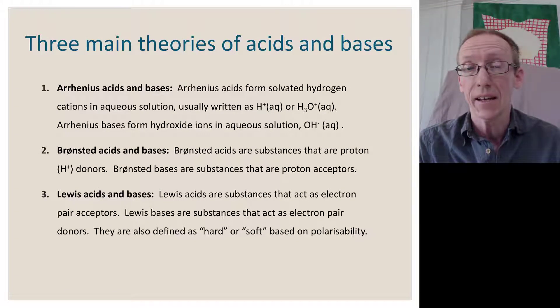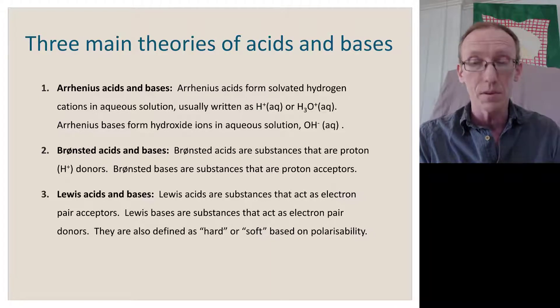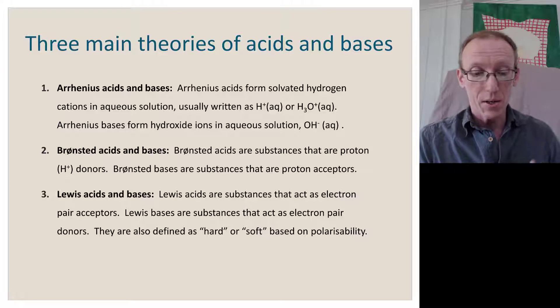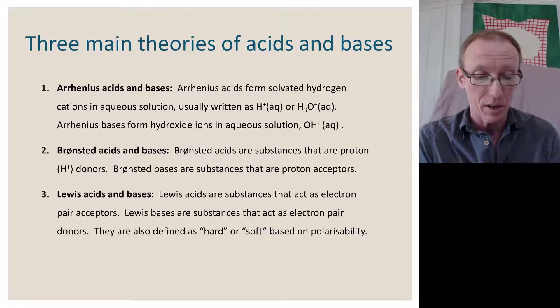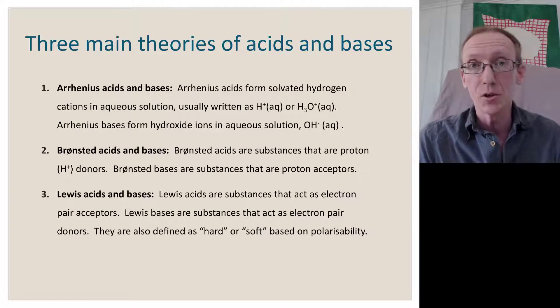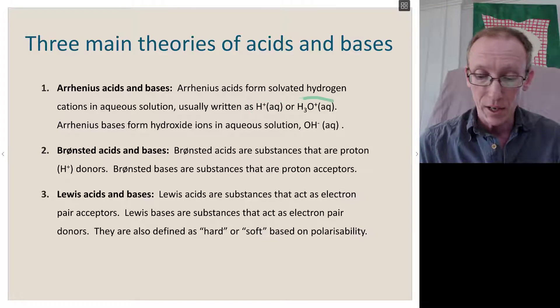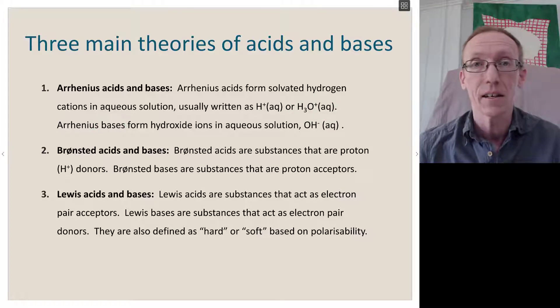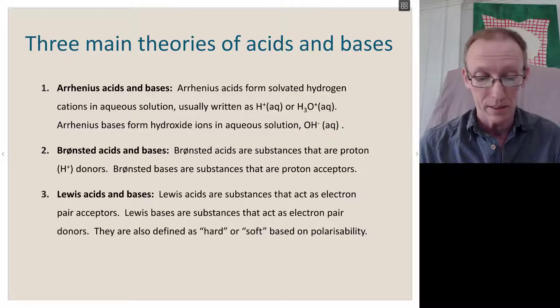There are three main theories of acids and bases, and they're in chronological order. The oldest theory is the Arrhenius acid-base theory, which is that acids are a solvated proton or solvated hydrogen cation, H+. That's usually written as H+ aqueous or H3O+, the hydronium ion. And bases, in the Arrhenius sense, are hydroxide ions in aqueous solution, OH- with AQ in brackets.